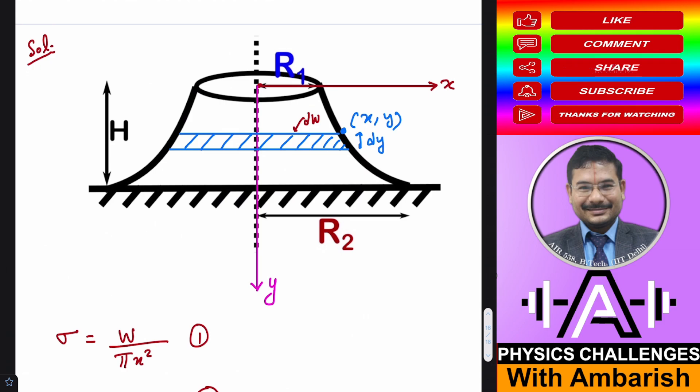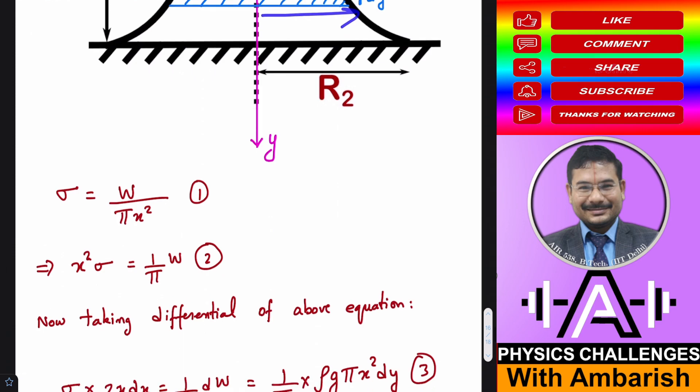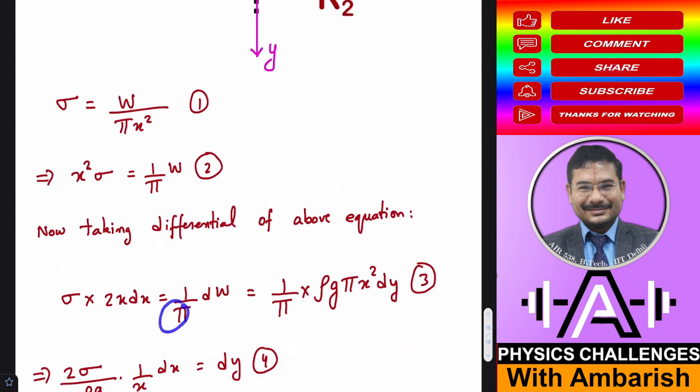and additional weight has to be supported by σ times additional area because stress is constant but area has increased. So what will be the additional area? So additional area will be nothing but 2π x dx. You take the π over here and the additional area is 2π x dx, that's a very familiar expression. So that's the logic of this equation.